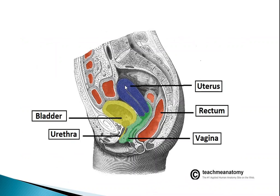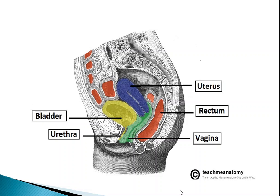In the diagram you can see the uterus positioned with the bladder in front, the urethra below it, the vagina inferiorly, and the rectum posteriorly. This confirms the uterus sits between the bladder and the rectum, with the vagina below. There are mainly three layers of the uterus: the endometrium, the myometrium, and the perimetrium.